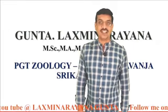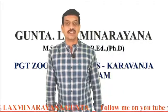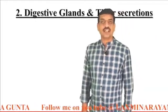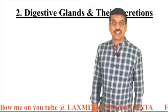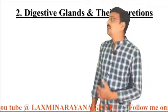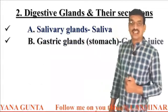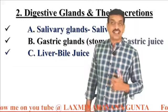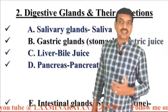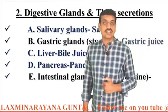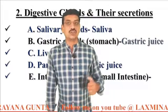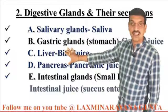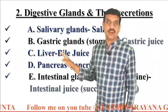Good morning. I am Laxminarayana Gunta, PGT in Geology at AP Model School and Junior College, Harwanja, Jalumuru Mandal, Srikakolam District. Today we are going to discuss the different digestive glands and their secretions. The digestive glands are: salivary glands, gastric glands, liver, pancreas, and intestinal glands — which secrete saliva, gastric juice, bile juice, pancreatic juice, and intestinal juice (also called succus entericus) respectively.